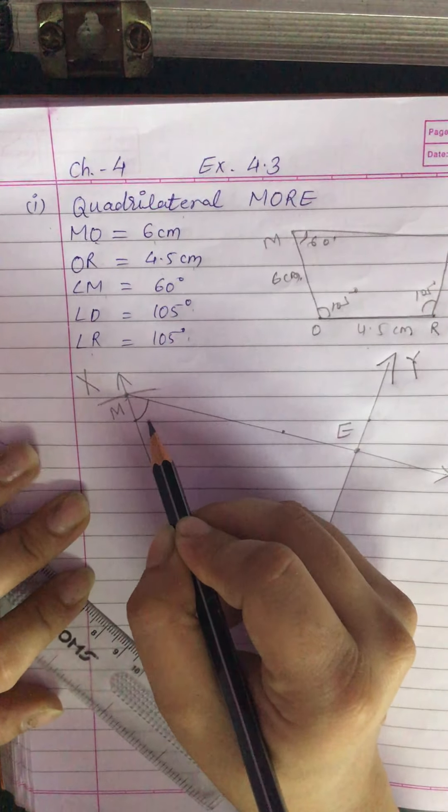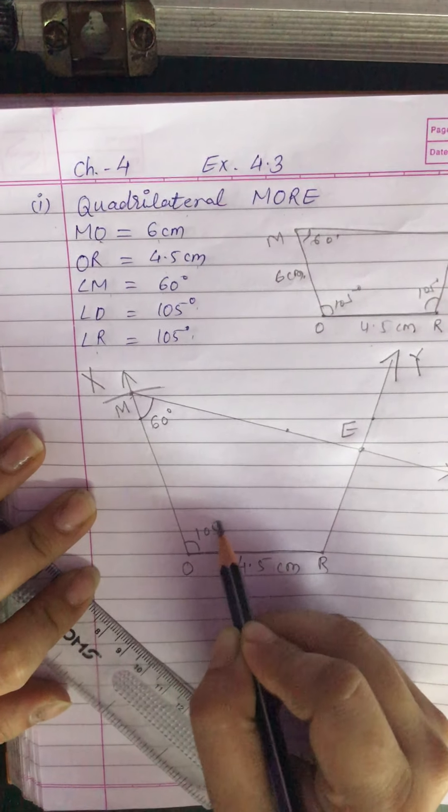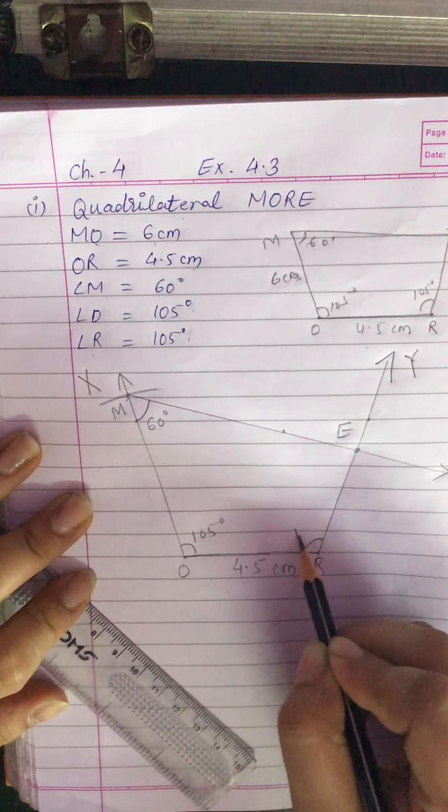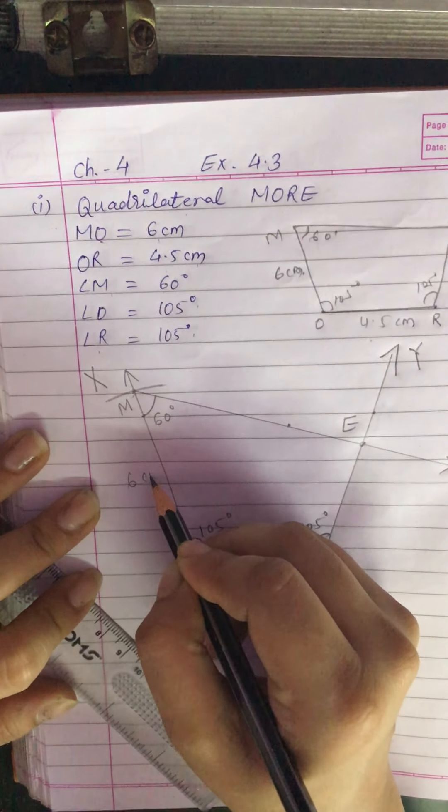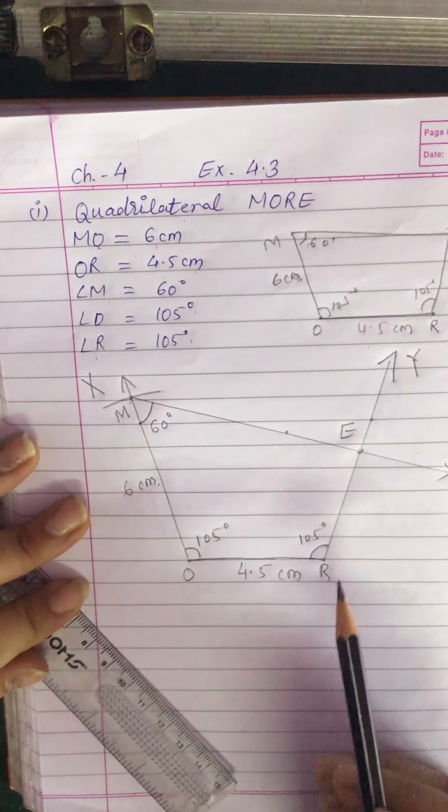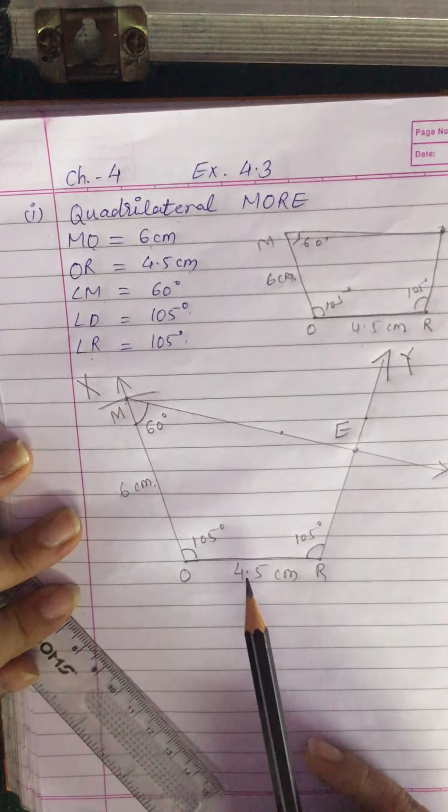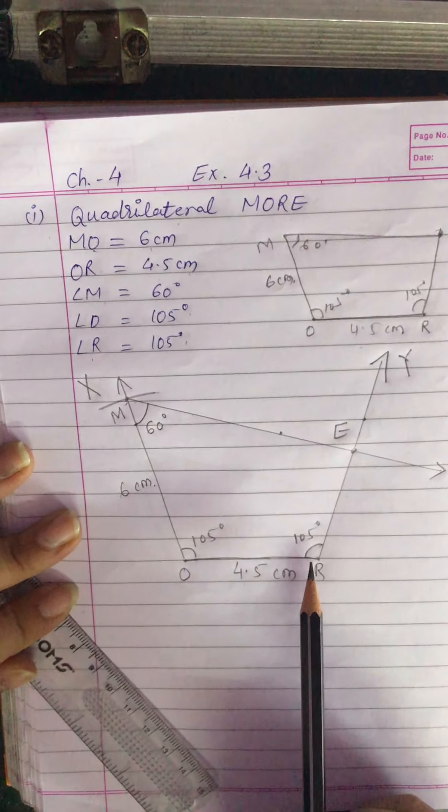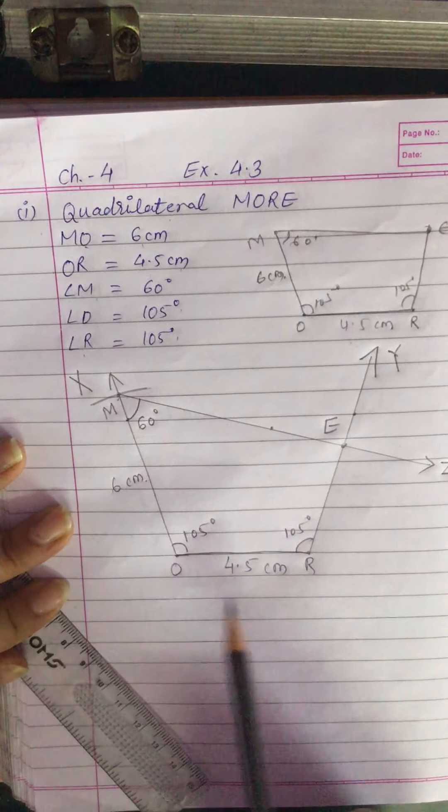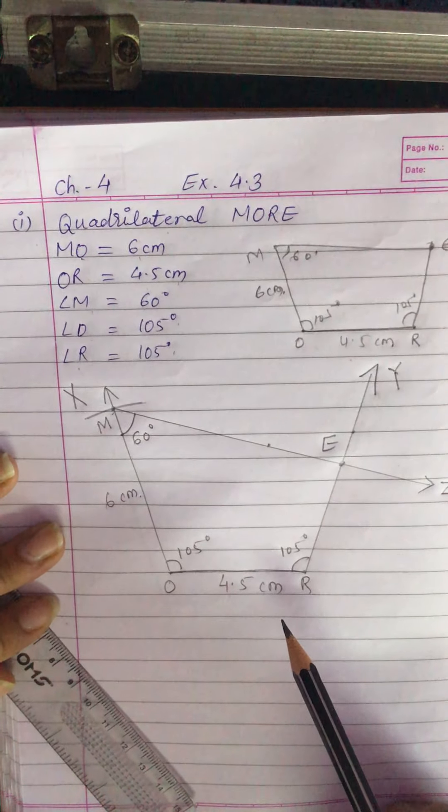So here at M 60 degrees, at O 105 degrees, at R also 105 degrees, and OM 6 cm. So it is the required quadrilateral MORE. In this, two sides and three angles are given. So it is the required quadrilateral MORE.